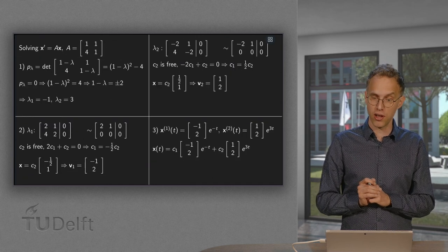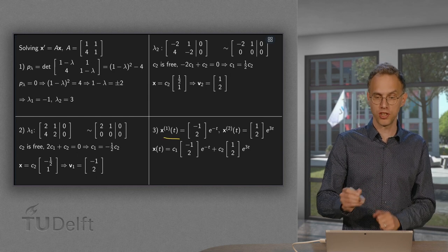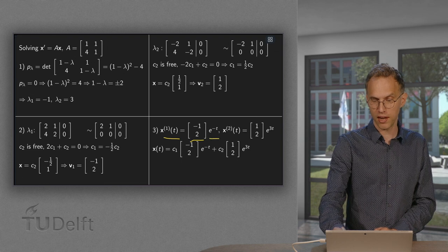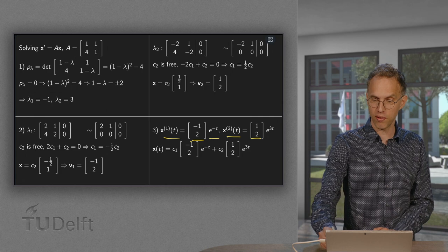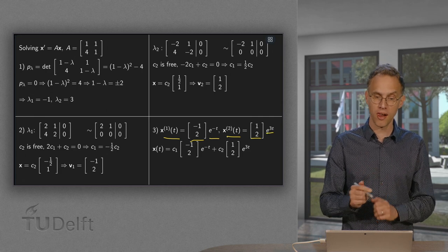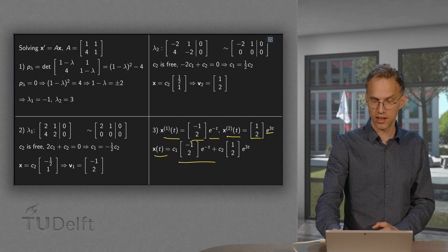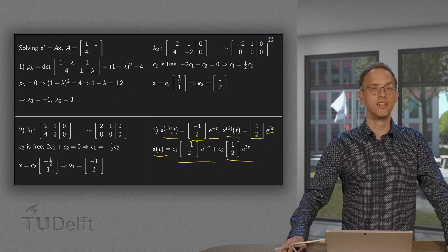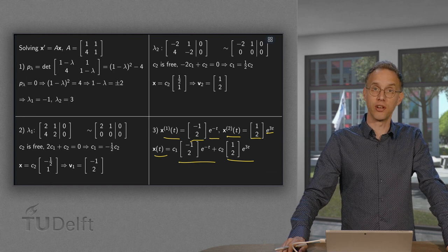And then we have our solution. So our x₁ of t, our first independent solution equals v₁ e^(λ₁t). And our second independent solution equals v₂ times e^(λ₂t). There we are. And our x of t is a linear combination of x₁ and x₂. So that is how you solve x' equals A times x if A is diagonalizable.